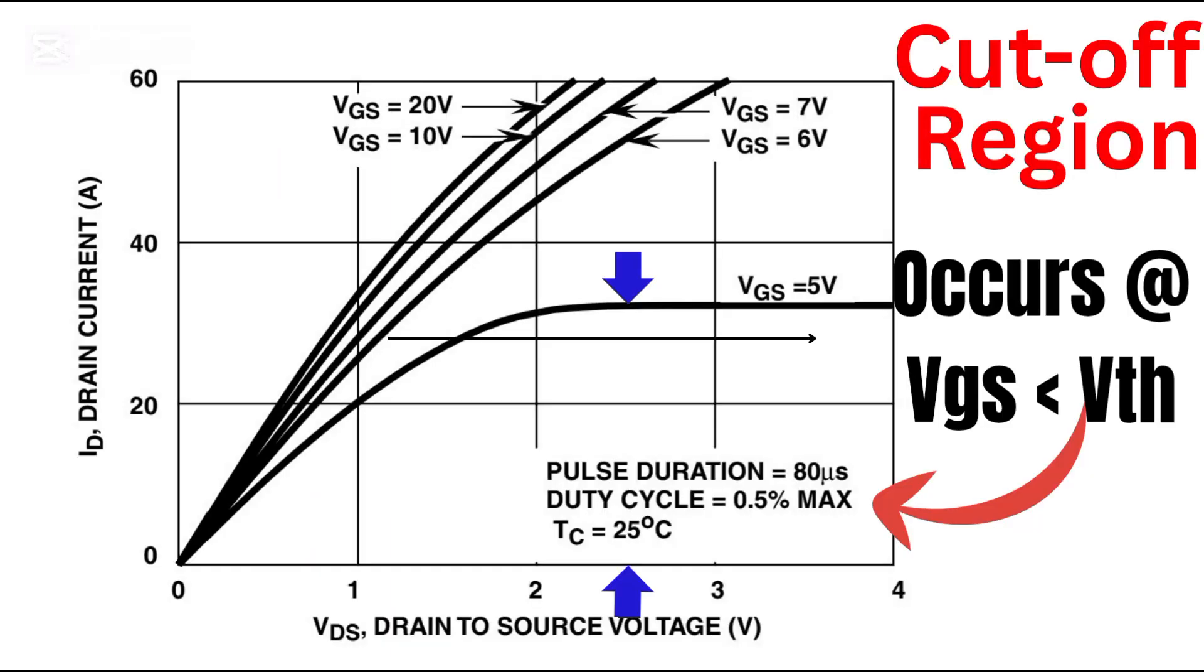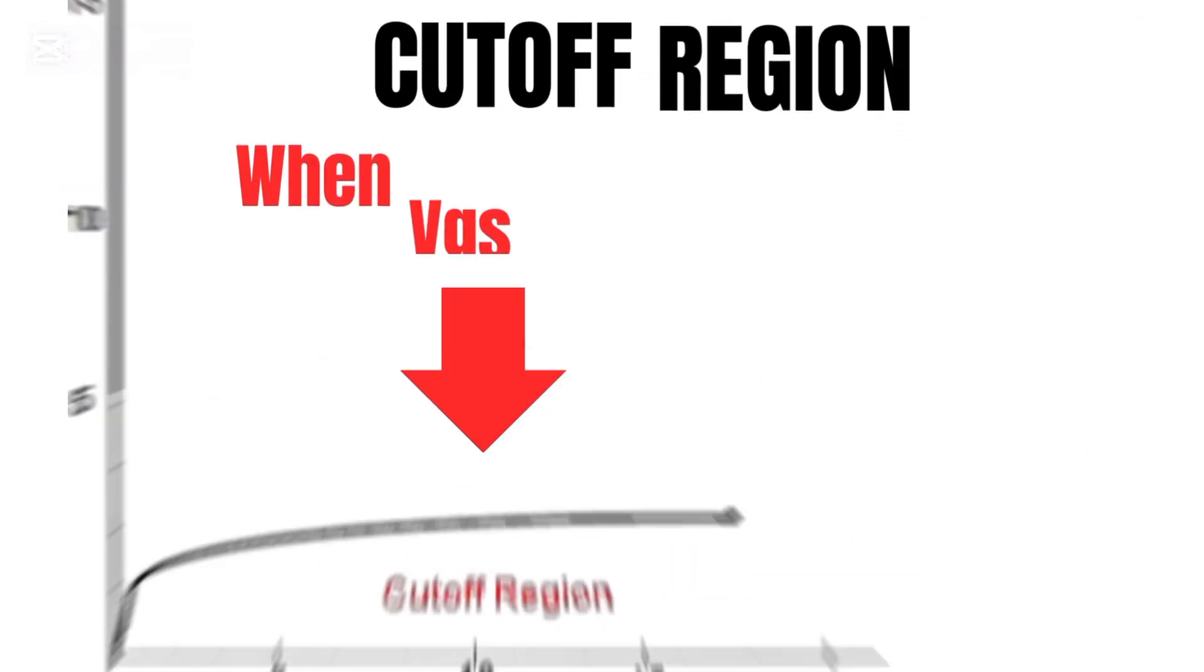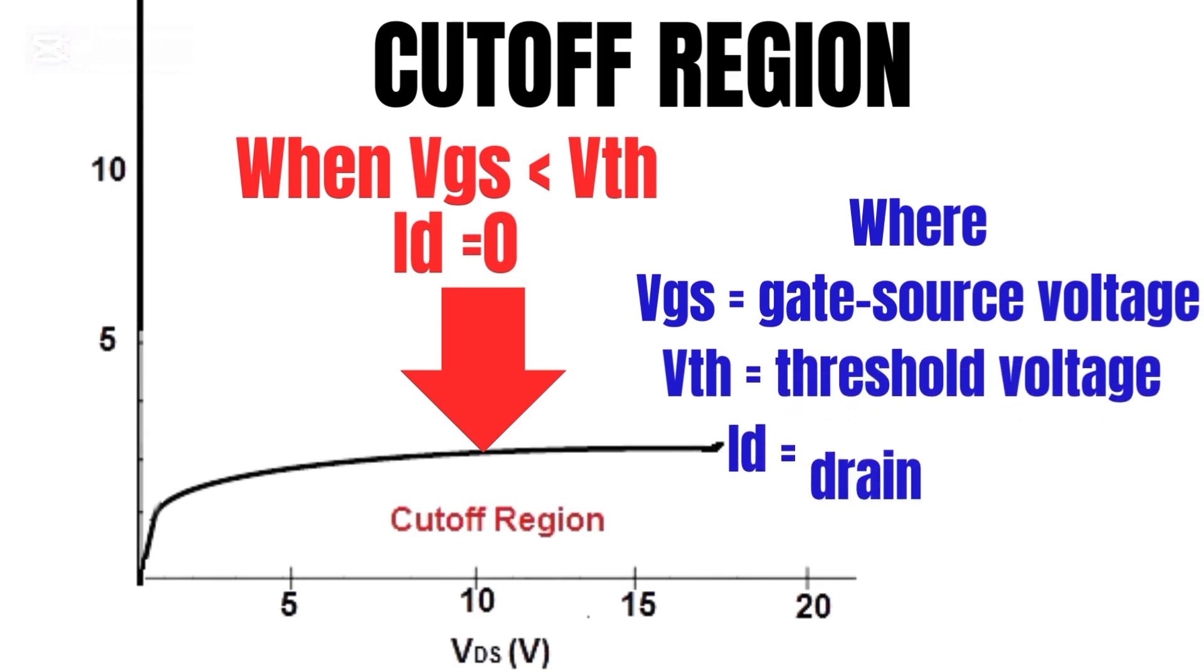There are three regions to note. One, cutoff region. When the gate-to-source voltage, VGS, is less than the threshold voltage, VTH, the MOSFET is off. No current flows. ID equals zero.